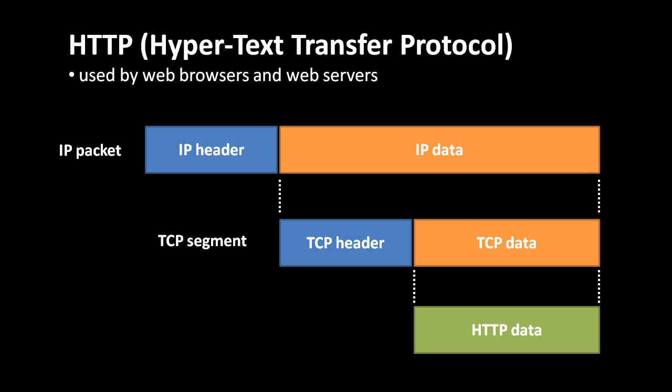When a web browser requests a page from a web server, the standard protocol used is called HTTP, which stands for Hypertext Transfer Protocol. As we discussed in an earlier unit, HTTP requests and responses are almost always sent over TCP/IP. The request or response data is put inside TCP segments, and those TCP segments are placed inside IP packets, which are then routed across the internet.